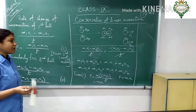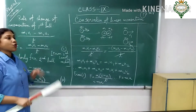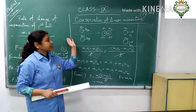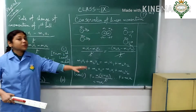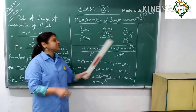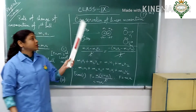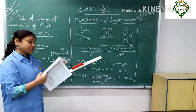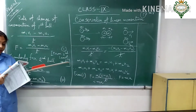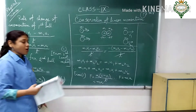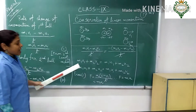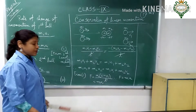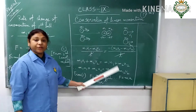Conservation means we have to prove that the total momentum before the collision of two bodies and the total momentum after the collision of two bodies are both equal. So first, we need to prove that the total momentum is the same before and after the collision.